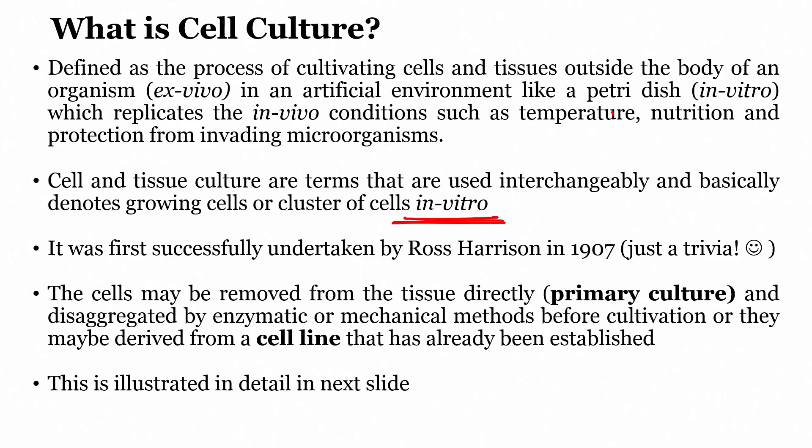Let us see who first discovered cell culture. It was first successfully undertaken by Ross Harrison in 1907. The cells may be removed from the tissue directly, called primary culture, and disaggregated by enzymatic or mechanical methods before cultivation — or they may be derived from a cell line that has already been established. Aggregation means coming together; disaggregation means separating out.